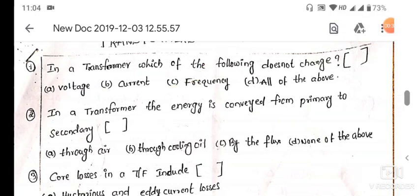In a transformer, the energy is conveyed from primary to secondary. Options: through air, through cooling oil, by the flux, or none of the above.